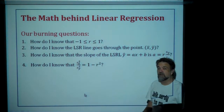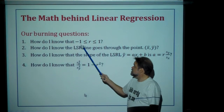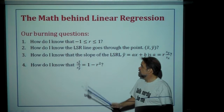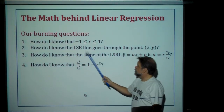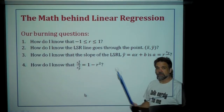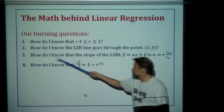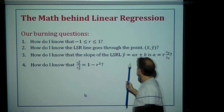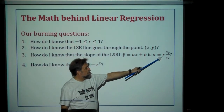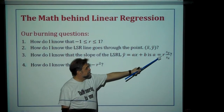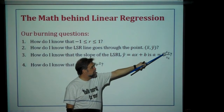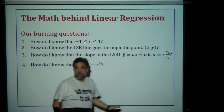Number one, this is actually two videos ago that I mentioned this — I said that r had to be between negative one and one. How do we know that? We're going to find out today. I also want to know how I know that the least squared regression line goes to the point x-bar, y-bar, that is the mean of x and mean of y. We're going to prove that today. I also want to know how I know that the slope of the least squared regression line y-hat equals ax plus b is a equals r times s-y over s-x — that is the correlation coefficient times the ratio of the standard deviation of y divided by standard deviation of x.